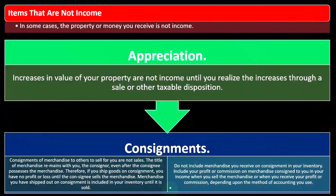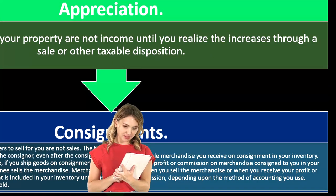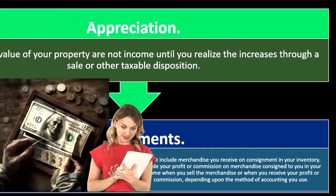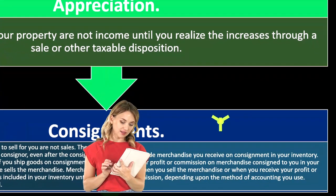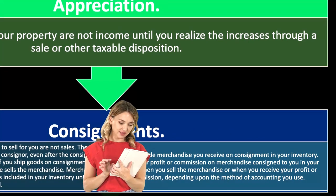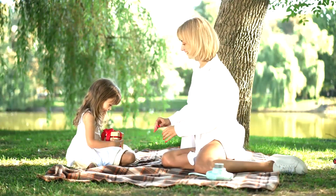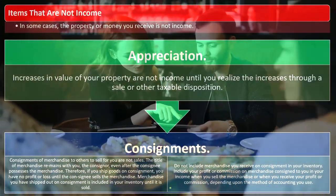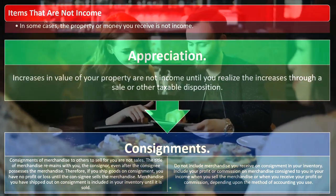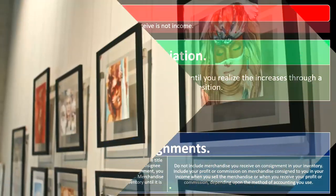Taking a fee, of course — do not include merchandise you receive on consignment in your own inventory. Include your profit or commission on merchandise consigned to you in your income when you sell the merchandise, or when you receive your profit or commission, depending on the method of accounting you use. In other words, if you're receiving someone else's inventory and selling it on consignment, it's not your inventory. If I have a restaurant and I'm displaying paintings that someone else owns, I don't really own the paintings — I'm trying to sell them by displaying them, perhaps in a museum or similar setting.